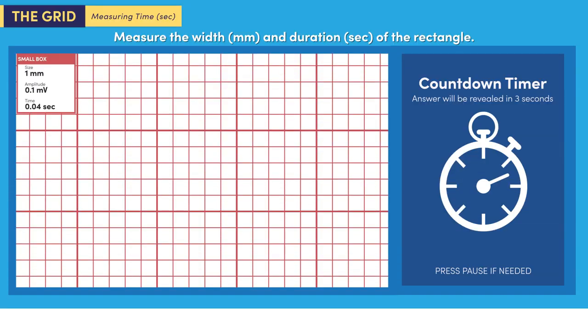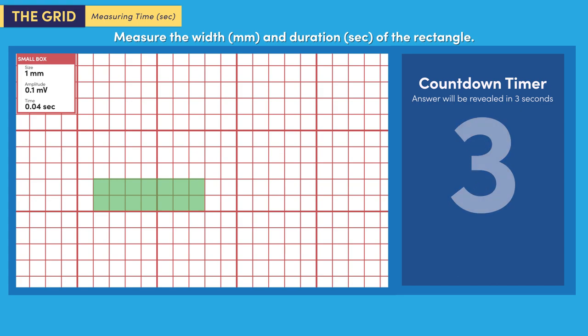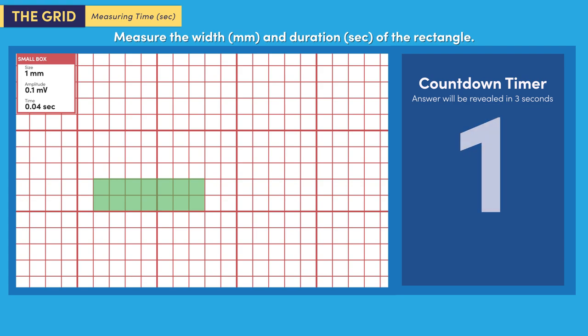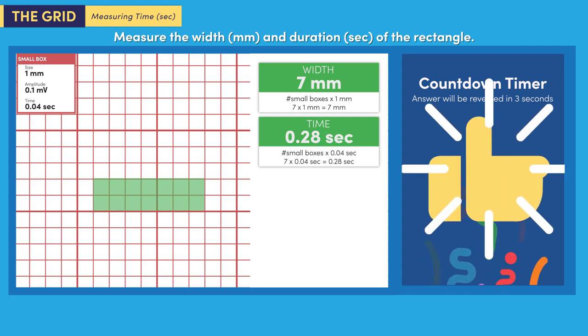It's time to practice. State the width and duration of this rectangle. The width is 7 millimeters and the time is 0.28 seconds. Did you answer correctly? Of course you did. You're definitely ready for wave measurements.